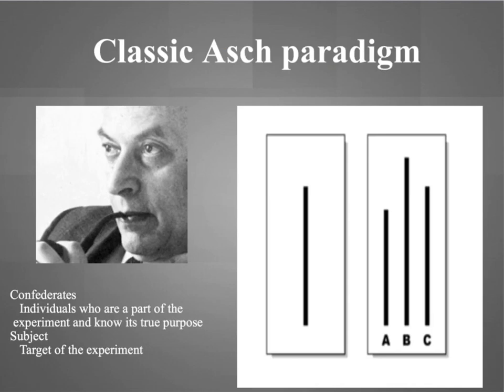When the fifth person agrees with the first four, you feel your heart begin to pound. The experimenter looks to you for your answer. Torn between the unanimity of your five fellow respondents and the evidence of your own eyes, you feel tense and less sure of yourself. You hesitate, wondering whether to suffer the discomfort of being the oddball. For the vast majority of research subjects, they conformed with the group instead of relying on their own senses, showing that fitting in is more important than risking public embarrassment. This is a very significant experiment — make sure you memorize it.